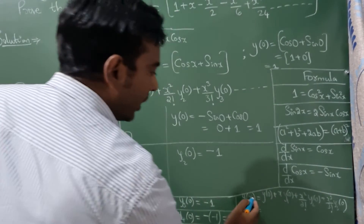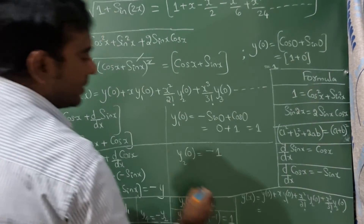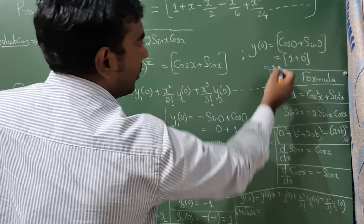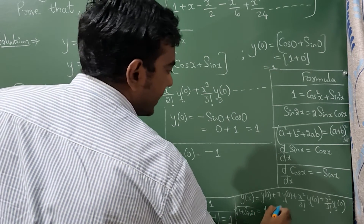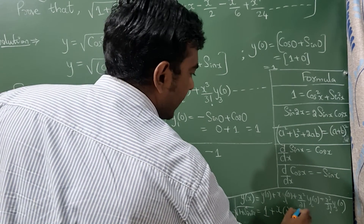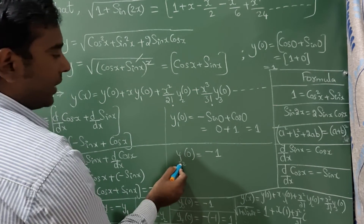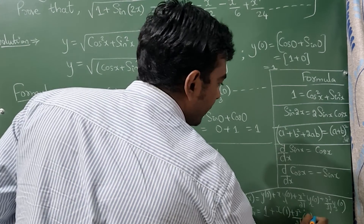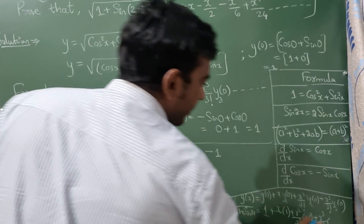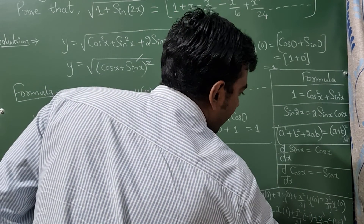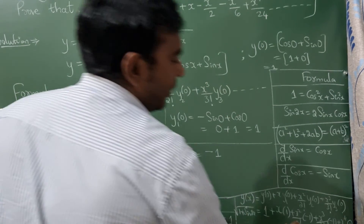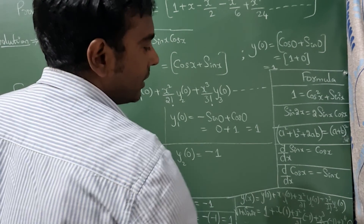Substituting all values into the Maclaurin formula: √(1 + sin 2x) = 1 + x·(1) + x²/2!·(−1) + x³/3!·(−1) + x⁴/4!·(1) = 1 + x − x²/2 − x³/6 + x⁴/24. You can stop here or continue further terms.